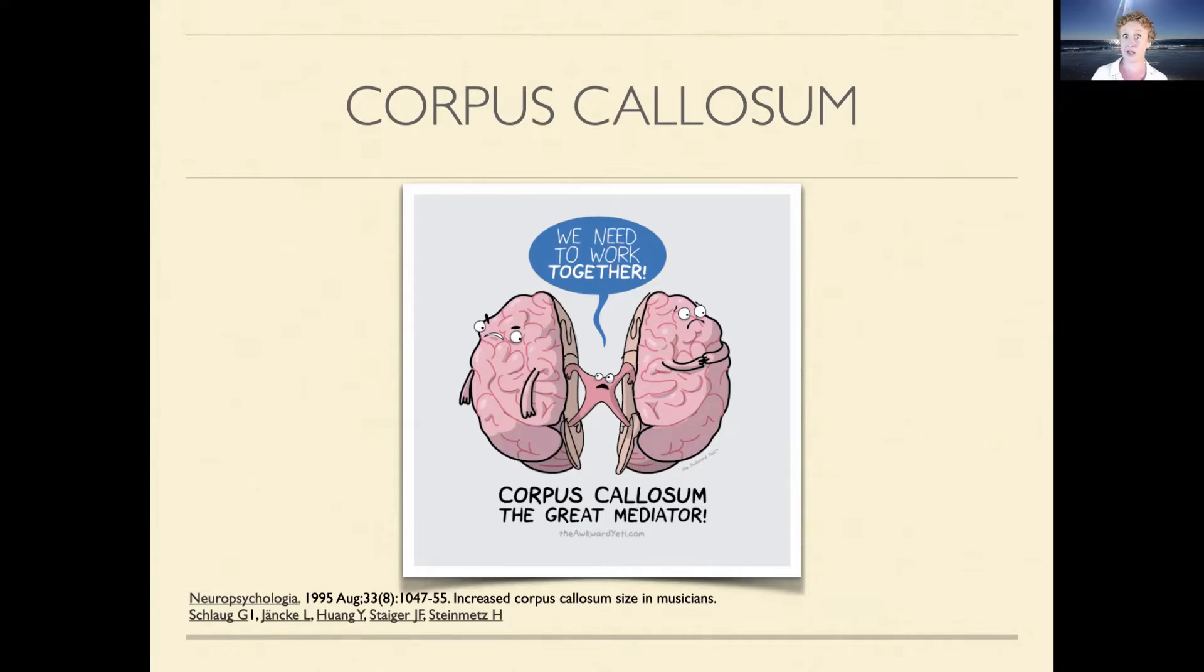So the corpus callosum of musicians who began training before the age of six is larger than those who didn't train in music from an early age. So what that shows is that there has to be a lot of cross activity going on. Now that could be because playing an instrument requires a lot of coordination between both sides, particularly for instruments like string instruments where both hands are doing completely different things.